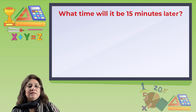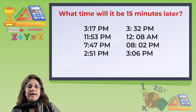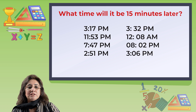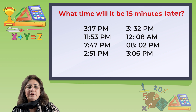What time will it be 15 minutes later than the given time? We will be adding minutes to minutes. 3:17 p.m. becomes 3:32 p.m. 11:53 p.m. becomes 12:48 a.m. 7:47 p.m. becomes 8:02 p.m. 2:51 p.m. becomes 3:06 p.m.